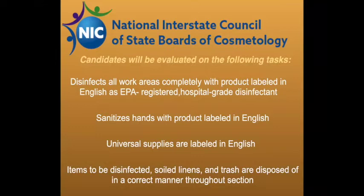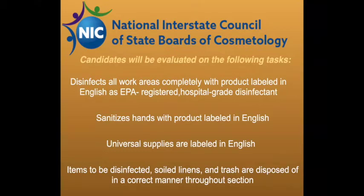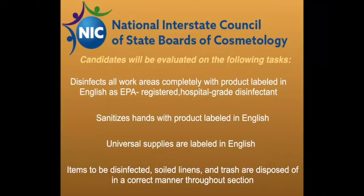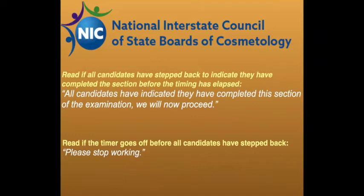Candidates are required to sanitize their hands with product labeled in English — this is not a simulated process. The product should have a manufacturer's label. Universal supplies should also be labeled in English. The candidate is required to disinfect their work area completely. Any item brought from client one to client two must be disinfected on every surface — for example, the water bottle should be disinfected on the bottom, sides, top, and spray handle, then placed in a clean disinfected area. Once candidates have disinfected and set up universal supplies, the proctor reads: all candidates have completed this section. We will now proceed.